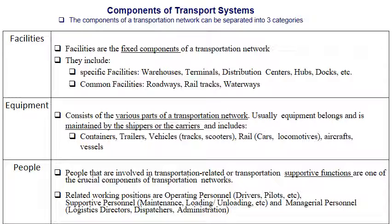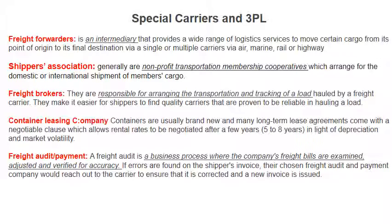The third category of people in transportation is managerial personnel — logistics directors, dispatchers, and administration staff. All people working in the transportation department serve as supportive functions across these three forms: operating personnel, supportive personnel, and managerial personnel.